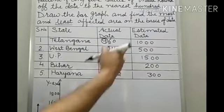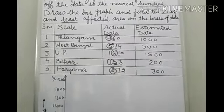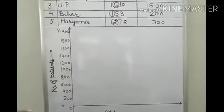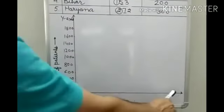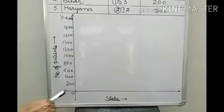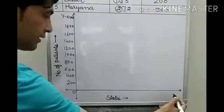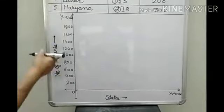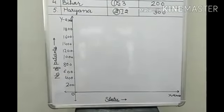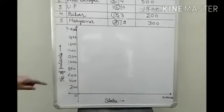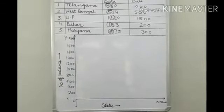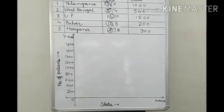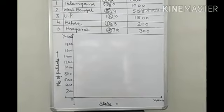Now friend, you have to represent these numbers on the graph. So to draw the bar graph, you have to take two axes. One is horizontal and another is vertical. This horizontal axis is known as x-axis. And this vertical axis is known as y-axis. So along this vertical axis, you have to take the number of patient. And along x-axis, you have to take the state.